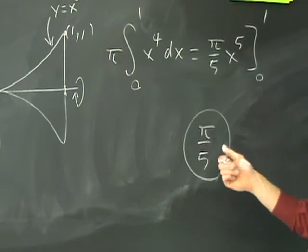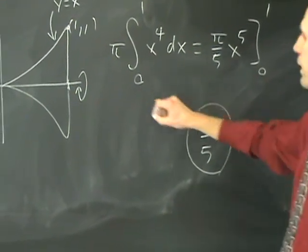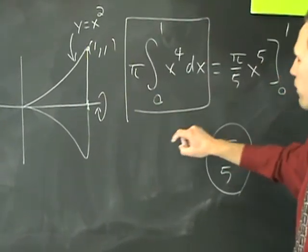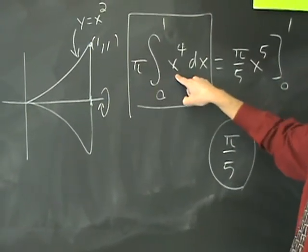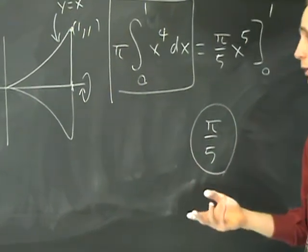You could effectively interpret this whole setup here as the area underneath the function pi times X to the fourth. Since all of these can be interpreted as areas, they can all be evaluated the same way.